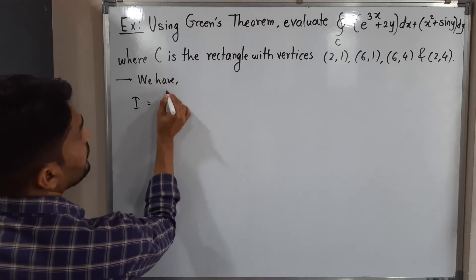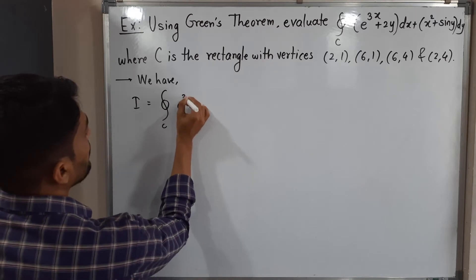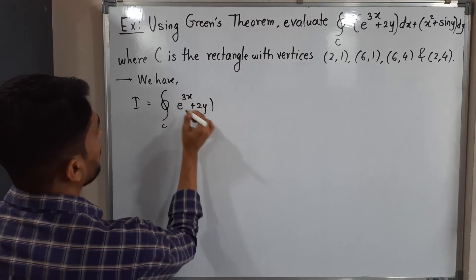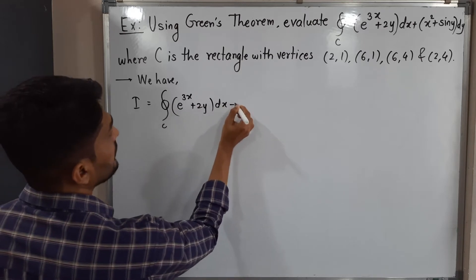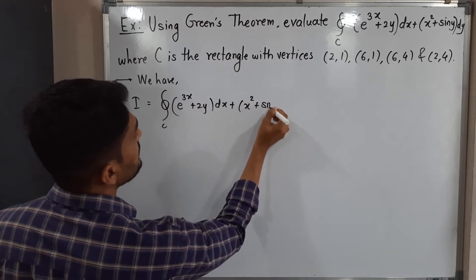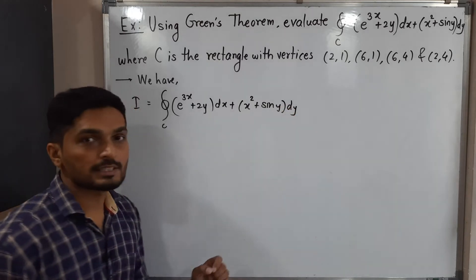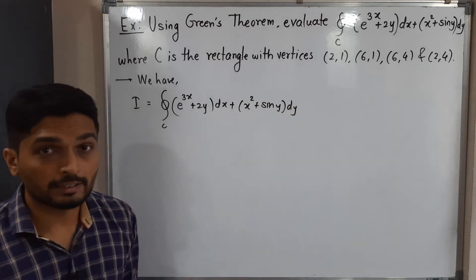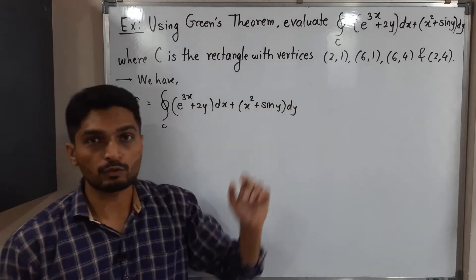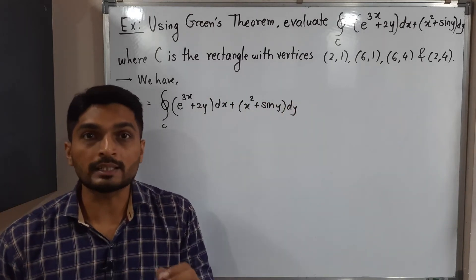I is equal to the integration over C of e^(3x+2y) dx plus (x² + sin y) dy. We have to find the value of this line integral over C, where C is a rectangle having four vertices, using Green's theorem.